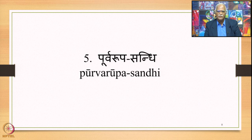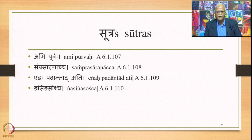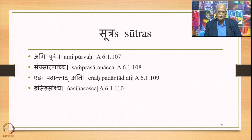Let us now concentrate on Purvarupasandhi, the fifth instance of the second type. This Purvarupasandhi is stated by four Sutras that we shall be dealing with: first, Amipurvaha 6.1.107; second, Samprasaranach 6.1.108; third, Engah Padantat Ati 6.1.109; and finally, Nasingasoshya 6.1.110. These are the four Sutras we shall study in detail in today's lecture.